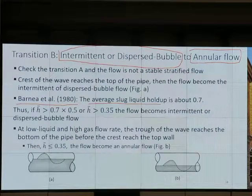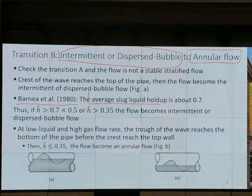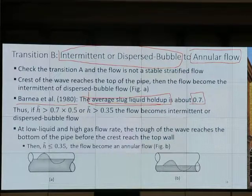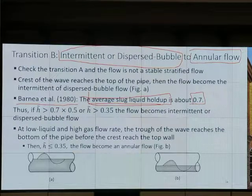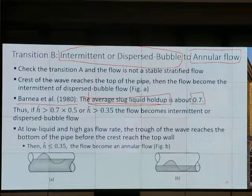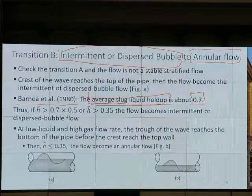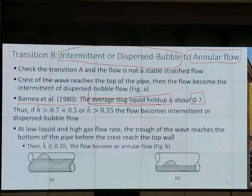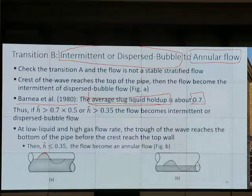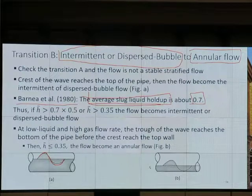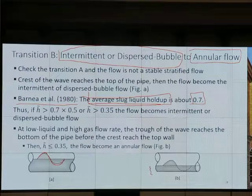Once we know it's not stratified flow, Taitel-Dukler comes with a way to model this. Barnea et al. came with a model to check if it is annular flow or not. They found that on average, slug liquid holdup is about 0.7. Another 30% in the slug body is gas. So if we're going to form a wave, that wave is not 100% liquid - it's 70% liquid. The assumption here is the wave looks like a sine wave, with the magnitude on the top and bottom being the same.